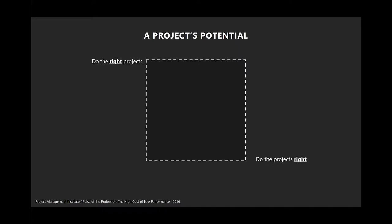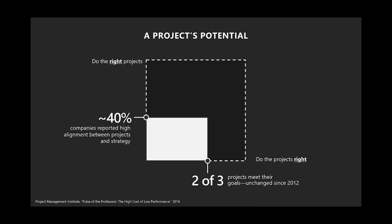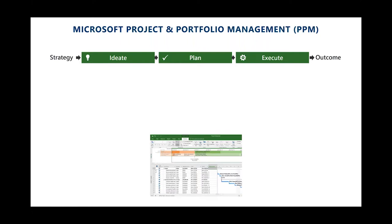The Project Management Institute conducted a study finding that only 40% of companies are actually choosing the right projects — meaning the project delivered the expected outcome. The other dimension is executing projects correctly: on budget, on time, and achieving the stated goal. Only about two out of three of those criteria are usually met. The untapped potential translates into lost return on investment — real dollars — and our solution helps decision makers choose the right projects and execute them successfully.